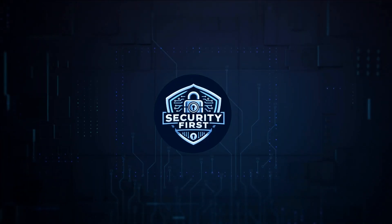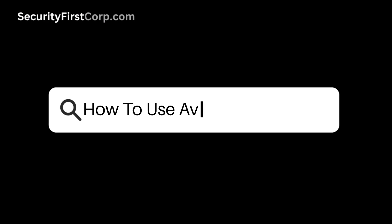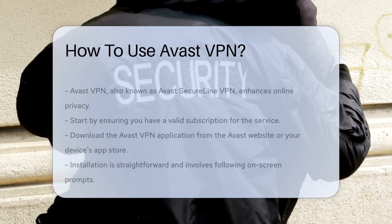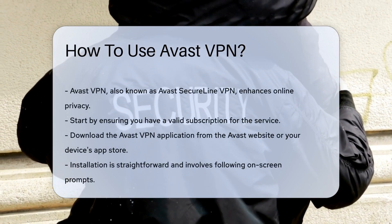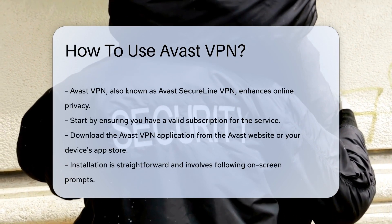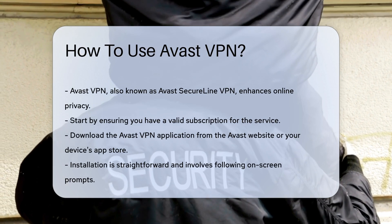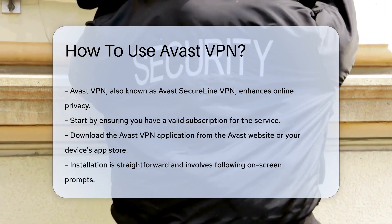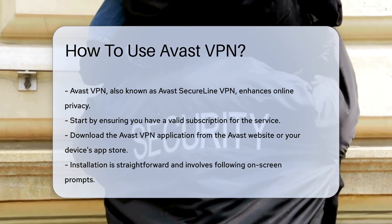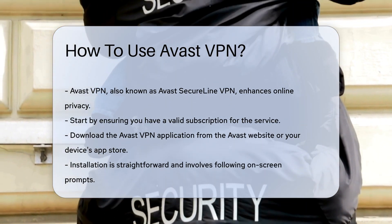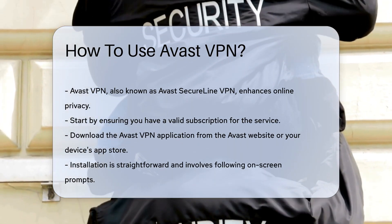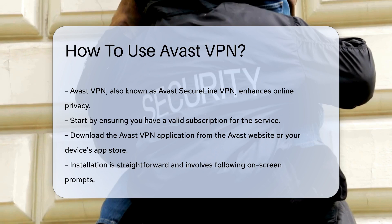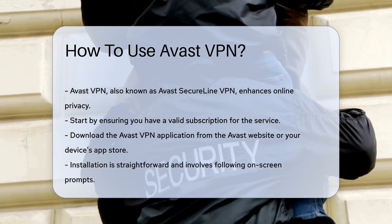Security First Corp — safety through knowledge. How to use Avast VPN. Avast VPN, known as Avast SecureLine VPN, is designed to enhance your online privacy. To begin using it, first ensure you have a valid subscription, then download the application from the Avast website or your device's app store. Installation is straightforward and typically involves following on-screen prompts.